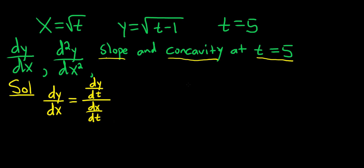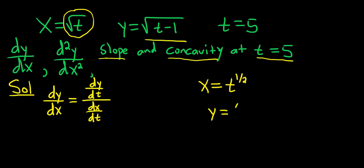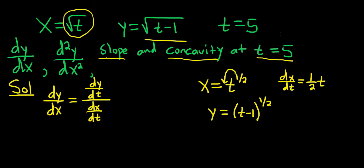Let's rewrite our parametric equations in a more convenient way. The square root of t can be written as t to the one-half. Likewise, y can be written as t minus 1 to the one-half. Let's work out the derivatives. For dx/dt, we can use the power rule: take the one-half and put it in the front, so one-half times t to the negative one-half, since one-half minus 1 is negative one-half.